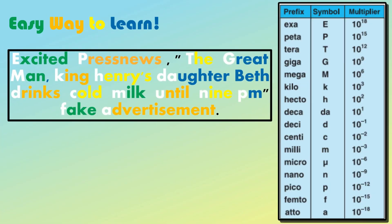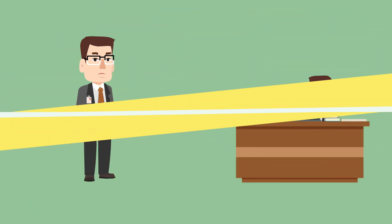Excited press news, the great man, King Henry's daughter Beth, drinks cold milk until 9 p.m.